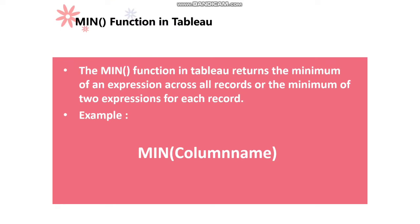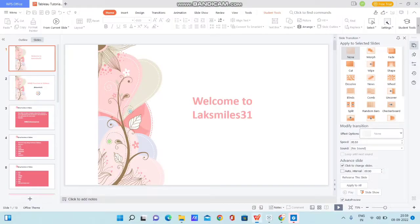The MIN function in Tableau returns the minimum of an expression across all records, or the minimum of two expressions for each record. As the name suggests, the MIN function returns the minimum value of all the records available in your dataset. The syntax is MIN of a column name — you provide the column for which you want to get the minimum value. For example, if I want the minimum of sales, I pass the sales field; if I want the minimum of profit, I pass profit within the MIN function. Let me open Tableau Desktop and demonstrate.